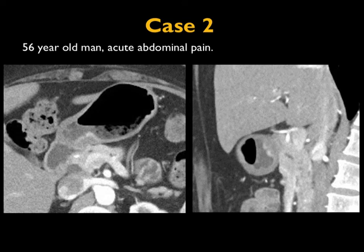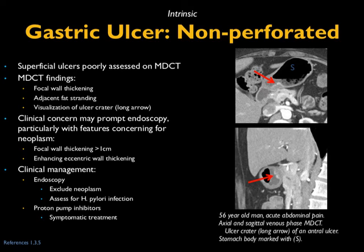Another case: there's some food in the stomach, but you see wall thickening particularly in the region of the greater curvature with enhancement at that point. This is actually a gastric ulcer that did not perforate. You can particularly see the area of focal thickening and ulcer on the sagittal view. Distinguishing a benign ulcer from a neoplastic process can be a challenge — when it's more bulky or there are nodes, I'm thinking neoplasm.